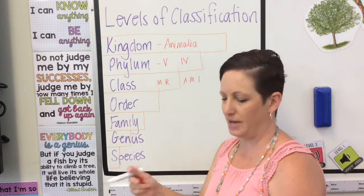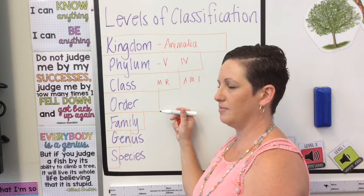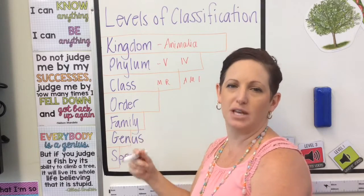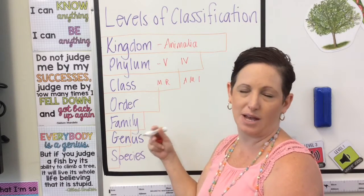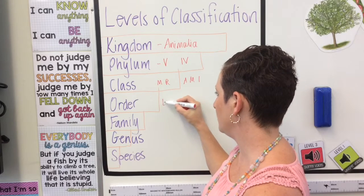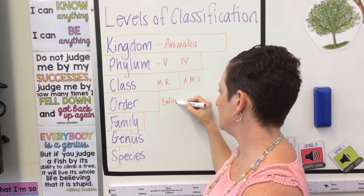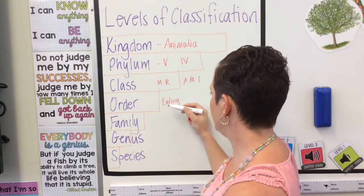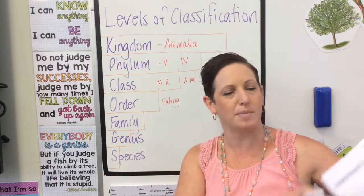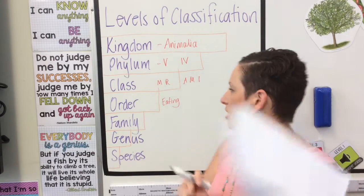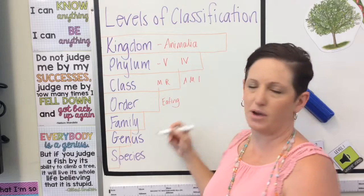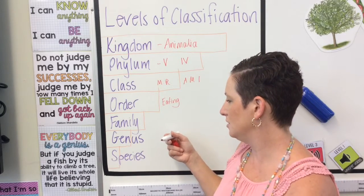When we go down to the next level, the order, we might have all the meat-eating mammals grouped together, all the plant-eating mammals grouped together, and all the mammals that eat plants and meat together — classifying them into smaller groups based on their eating or evolution. Then we come down to the family — so we might have a family of cats, a family of dogs, a family of horses, a family of cows, or a family of primates.